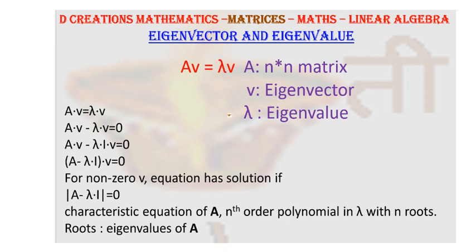Now if we take this equation further and rewrite it in the form where this lambda v we take to the left-hand side of the equal sign, so this becomes Av minus lambda v is equal to 0. But lambda into v can be rewritten as lambda into I, which is identity matrix, into v is equal to 0.